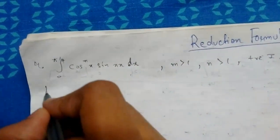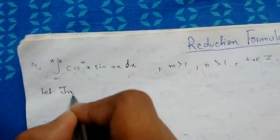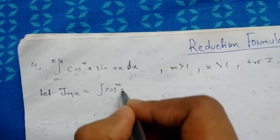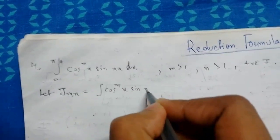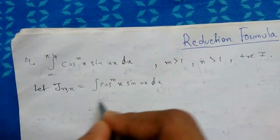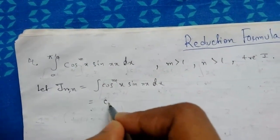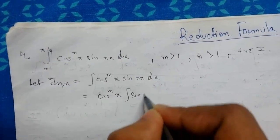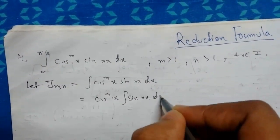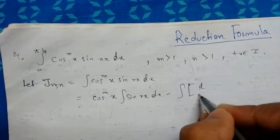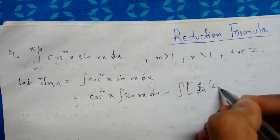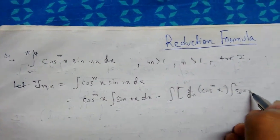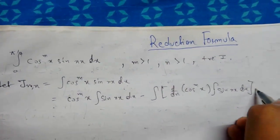We will do it in the usual process. Let J(m, n) be the integration of cos^m(x) · sin(nx) dx. Now integrating by parts, taking cos^m(x) as the first function — integration of sin(nx) dx — minus the integration of d/dx of cos^m(x) times the integration of sin(nx) dx, all dx.